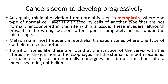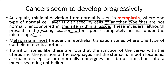Moving on, the next form is metaplasia. In this, an equally minimal deviation from normal is seen, where one type of normal cell layer is displaced by cells of another type not normally found at that site within a tissue. These invaders, although in the wrong location, often appear completely normal under the microscope. Metaplasia is most frequent in epithelial transition zones where one type of epithelial meets another.